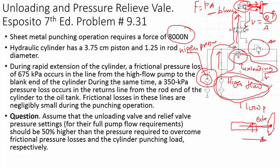On the blank side there is a 675 kilopascal loss, and on the rod end there is a 350 kilopascal loss. When the cylinder is fully extended and touching the sheet metal for punching, it is no longer moving, so there is no fluid friction or loss during the punching operation. However, when the cylinder is moving, there are significant fluid friction losses. Let me calculate those.